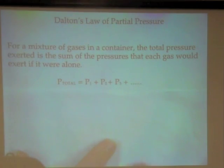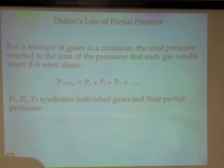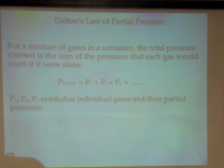So we write it like this. Total pressure equals the pressure of gas number one plus the pressure of gas number two plus the pressure of gas number three, etc. P1, P2, P3 symbolize individual gases and their partial pressures. Partial pressure meaning the pressure in which that one individual gas is contributing to total pressure of that mixture of gases.